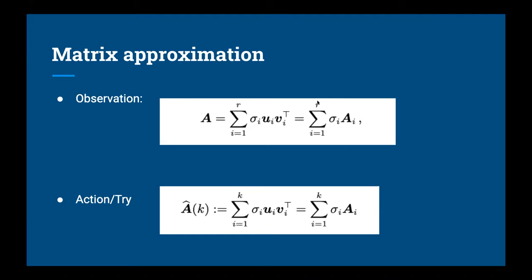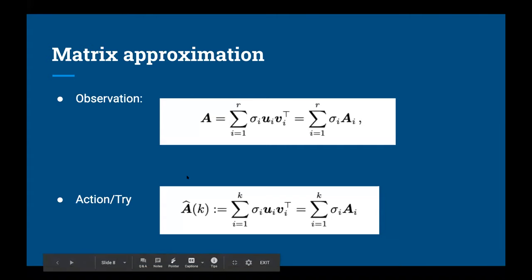What if we only sum a few of those rank-1 matrices instead of all R? The sigma values get smaller and smaller, so their contribution gets smaller and smaller — so we just don't use them. Instead of summing up to R, we sum only K of them. That gives us an approximation — matrix approximation. Let's see this in action.